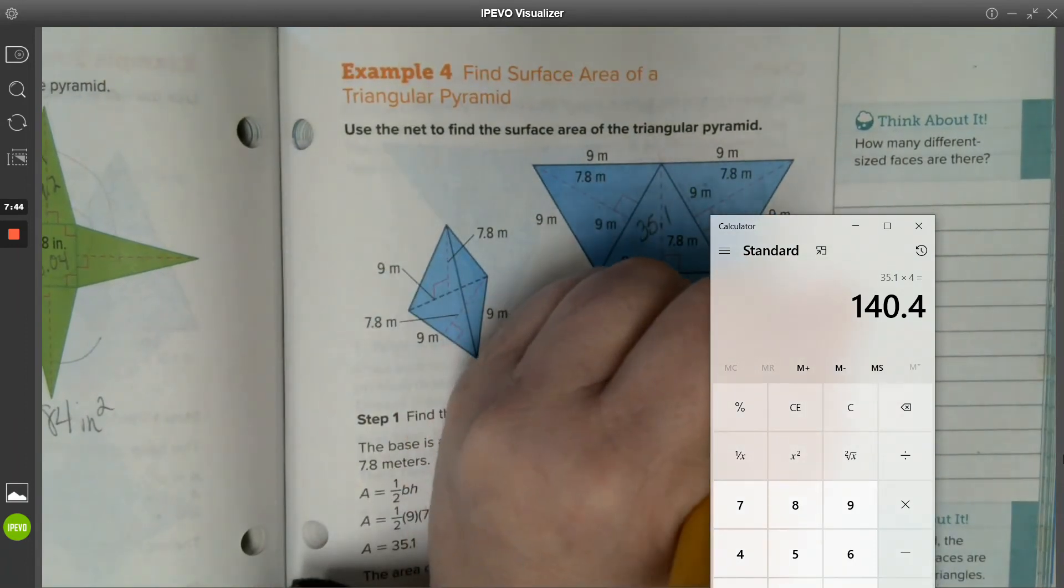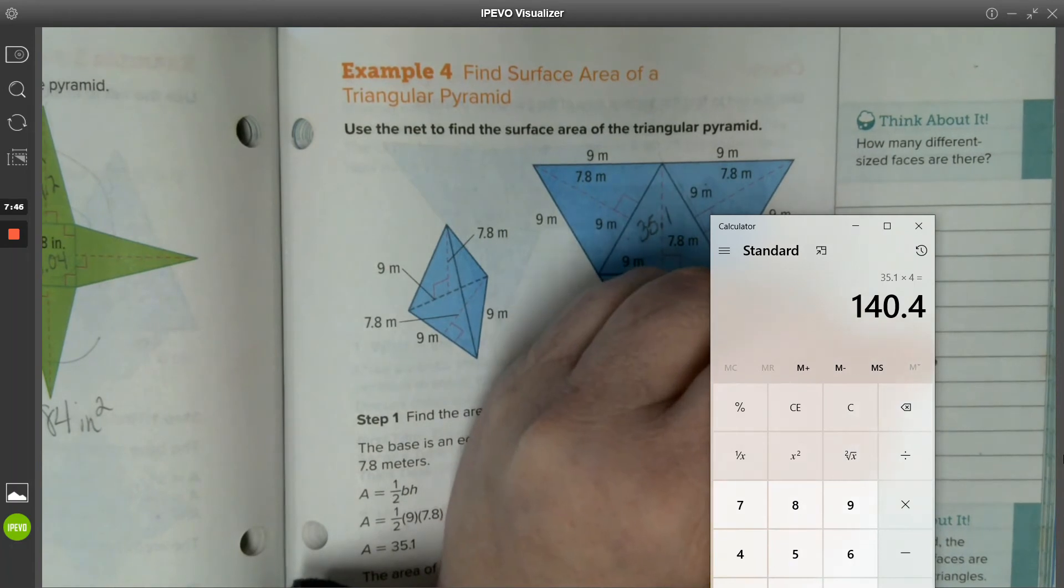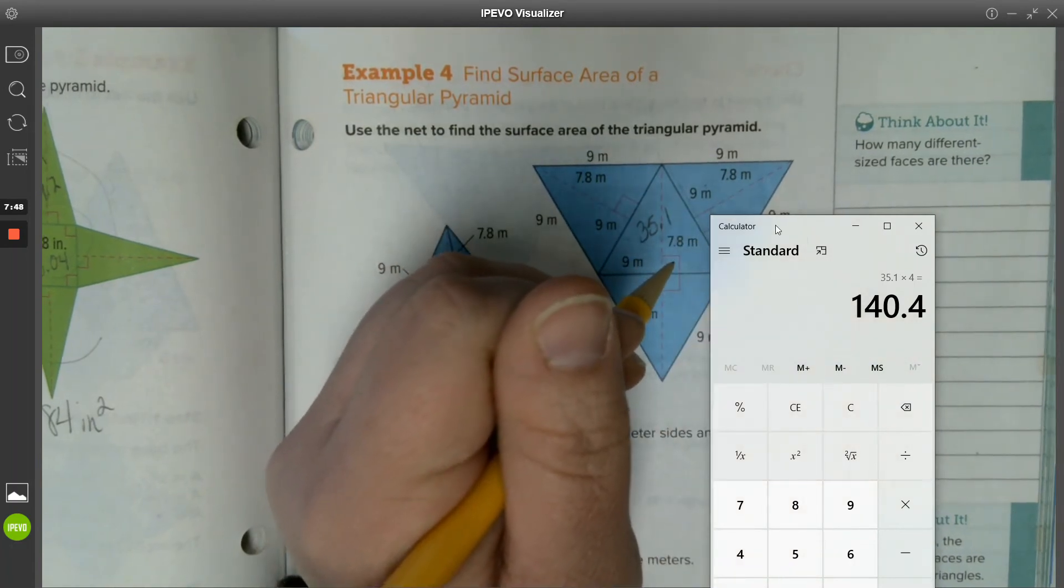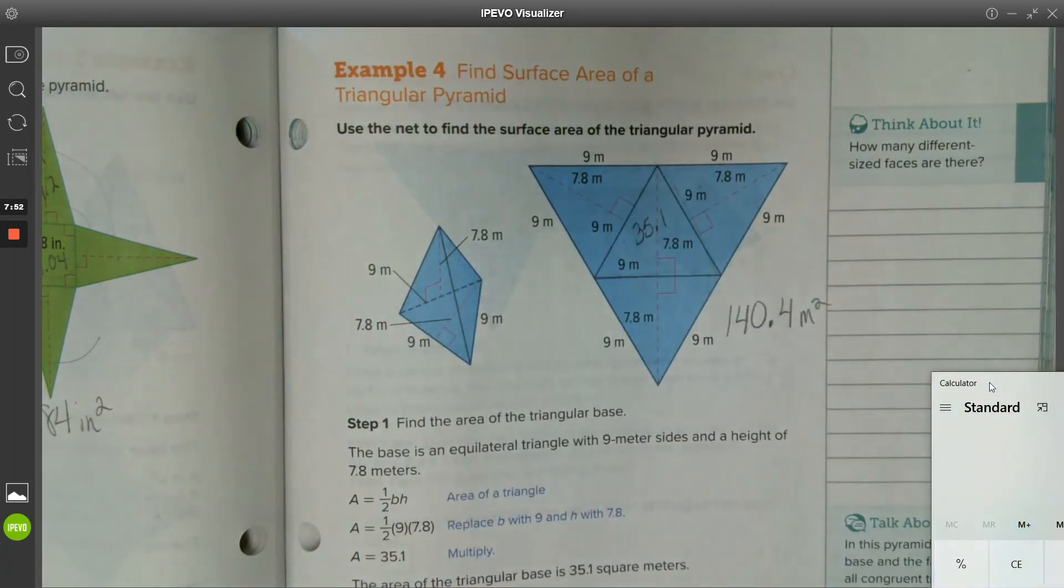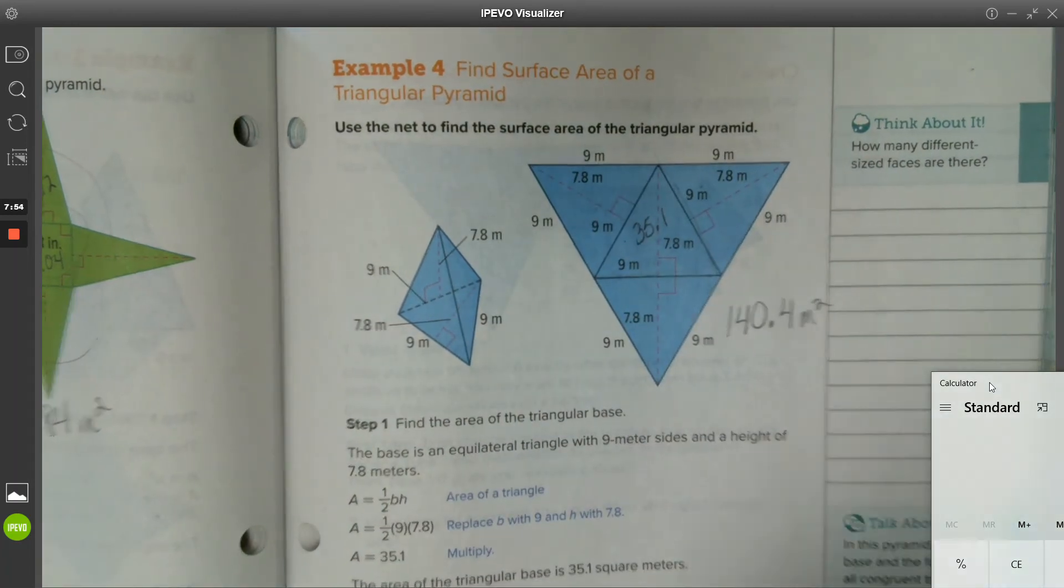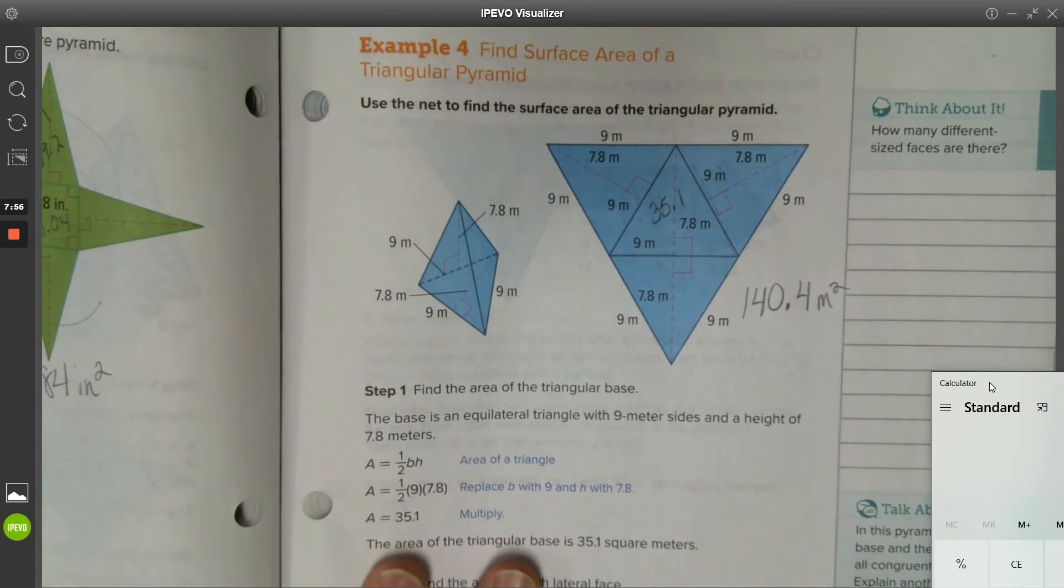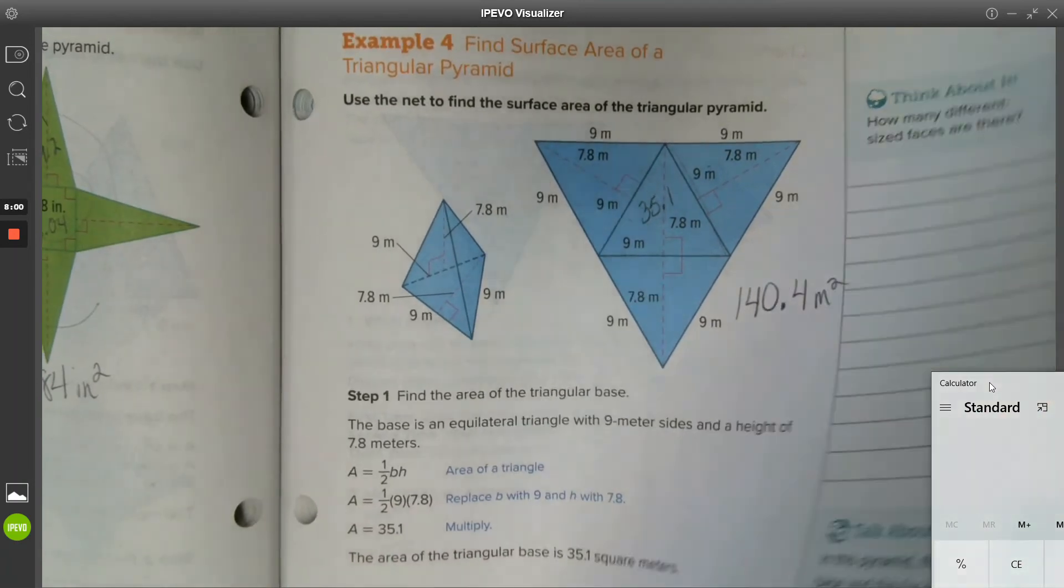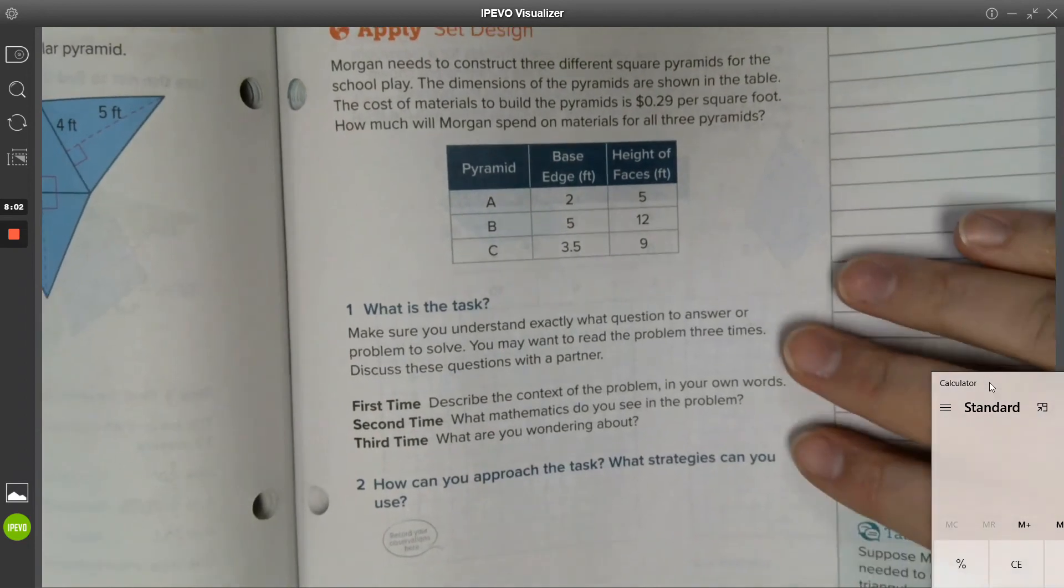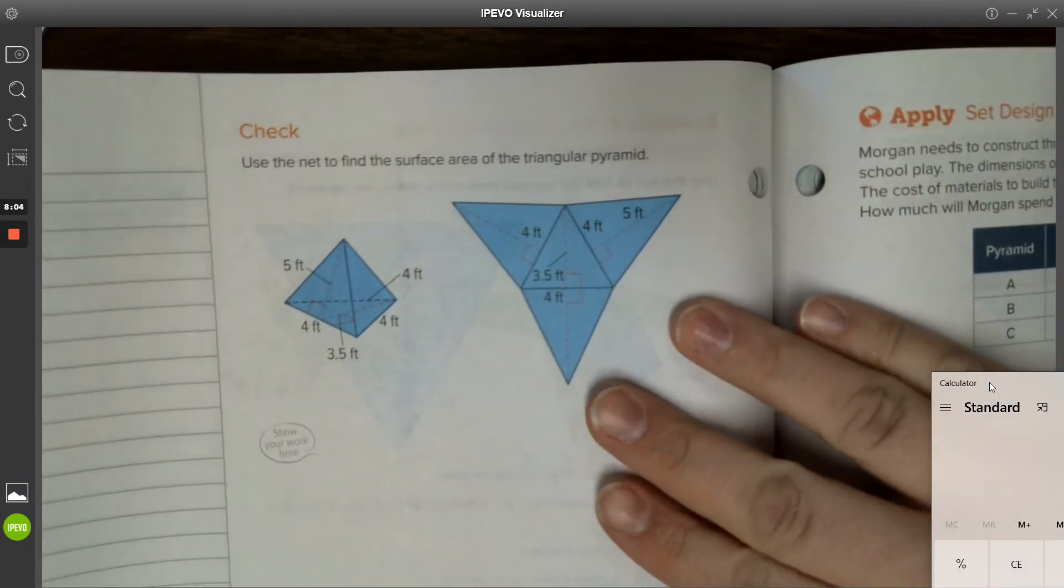I suppose I can move my calculator. That's 140.4 meters squared. Now does this work for every triangular base pyramid? No, only when this is completely made of equilateral triangles.